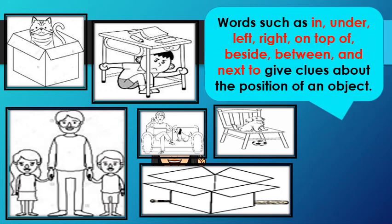Words such as in, under, left, right, on top of, beside, between, and next to give clues about the position of an object. For example, the cat is in the box. The boy is under his table.